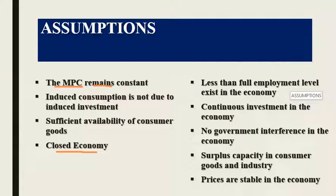The assumptions of the multiplier are: the marginal propensity to consume remains constant; induced consumption is not due to induced investment; we are not focusing on the effect of acceleration; there is sufficient availability of consumer goods; the economy is closed, so imports and exports do not affect income, output, and employment; the economy is not at full employment; there is continuous investment; no government interference; there is surplus capacity in the consumer goods industry; and prices are stable.